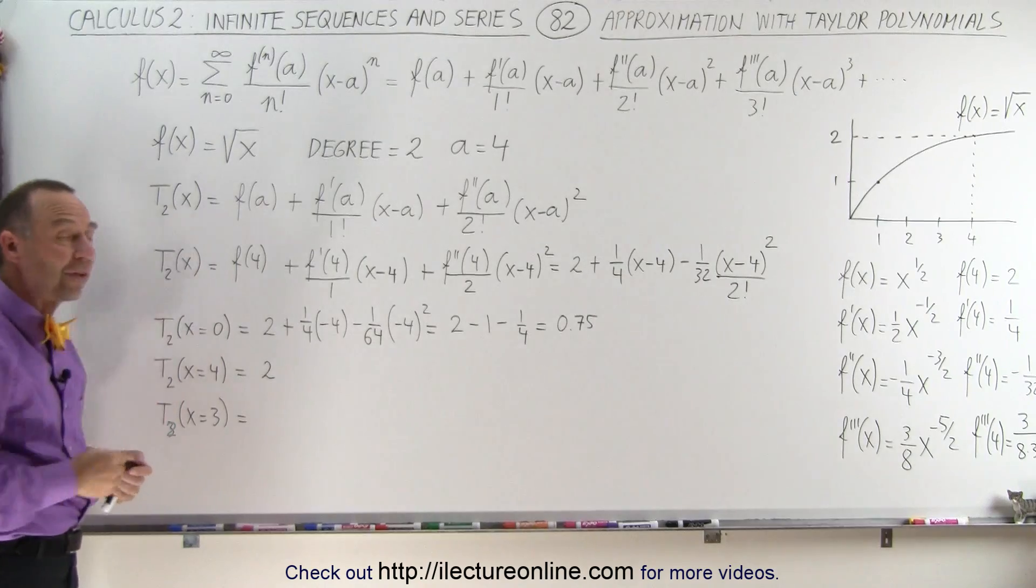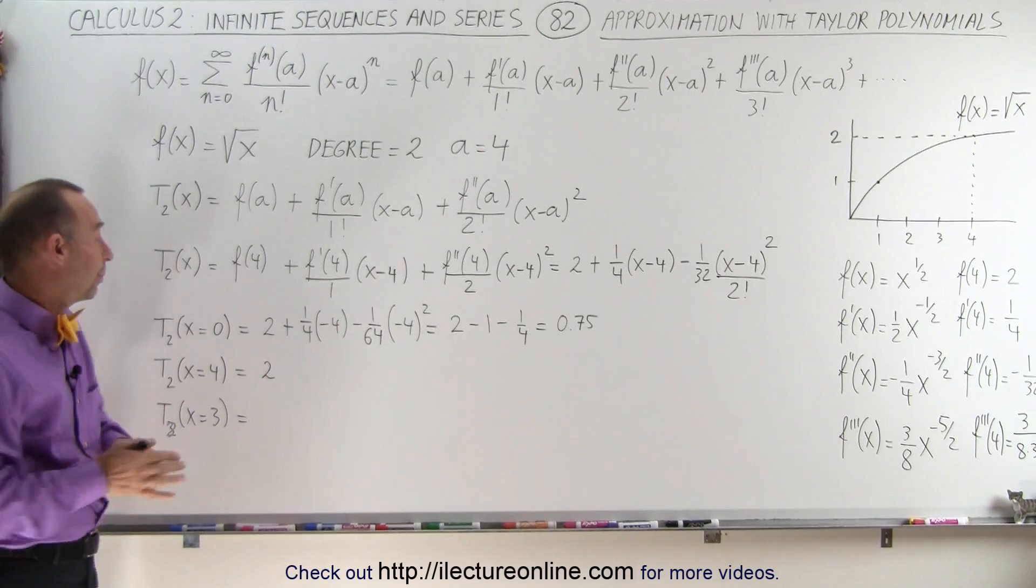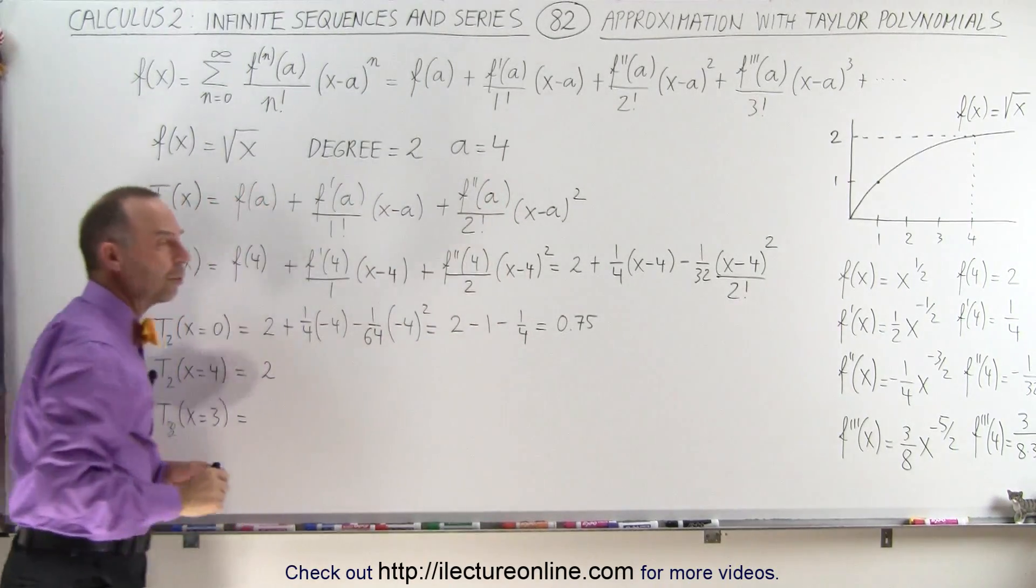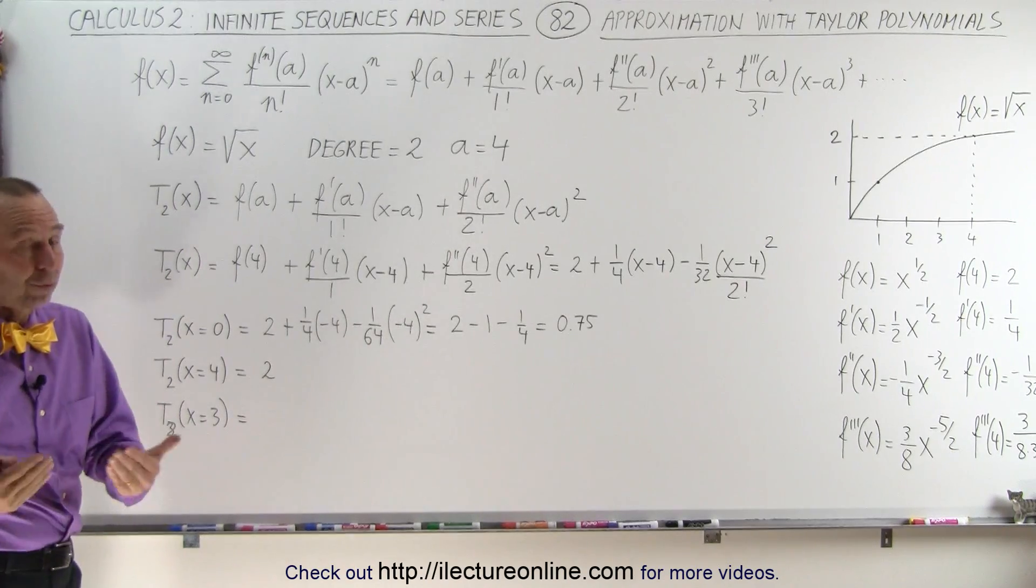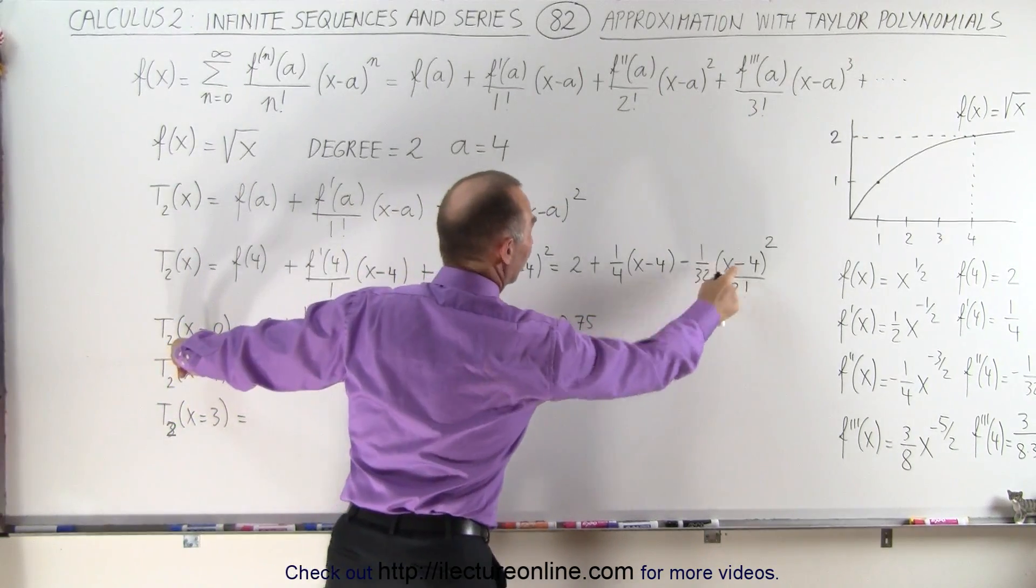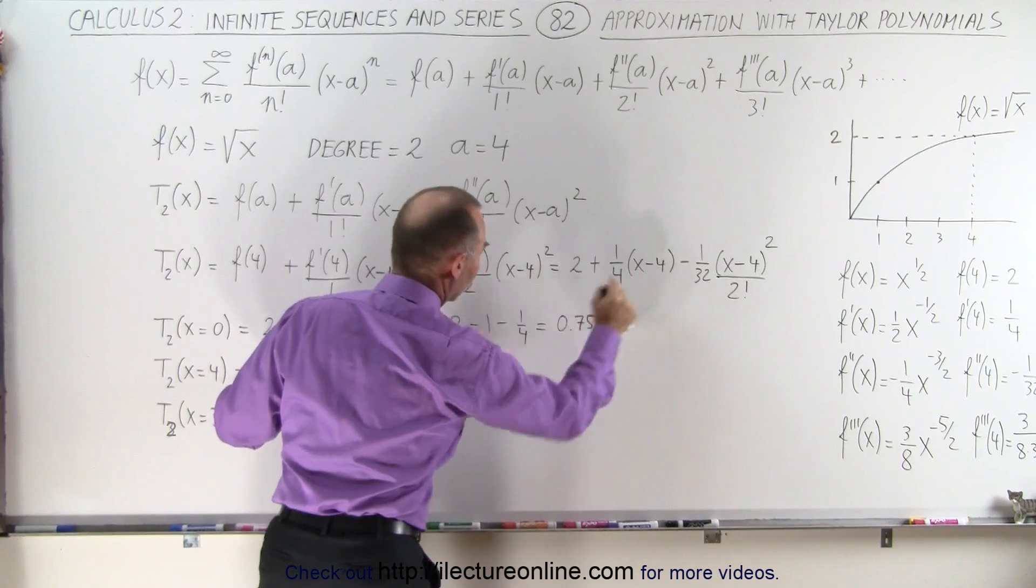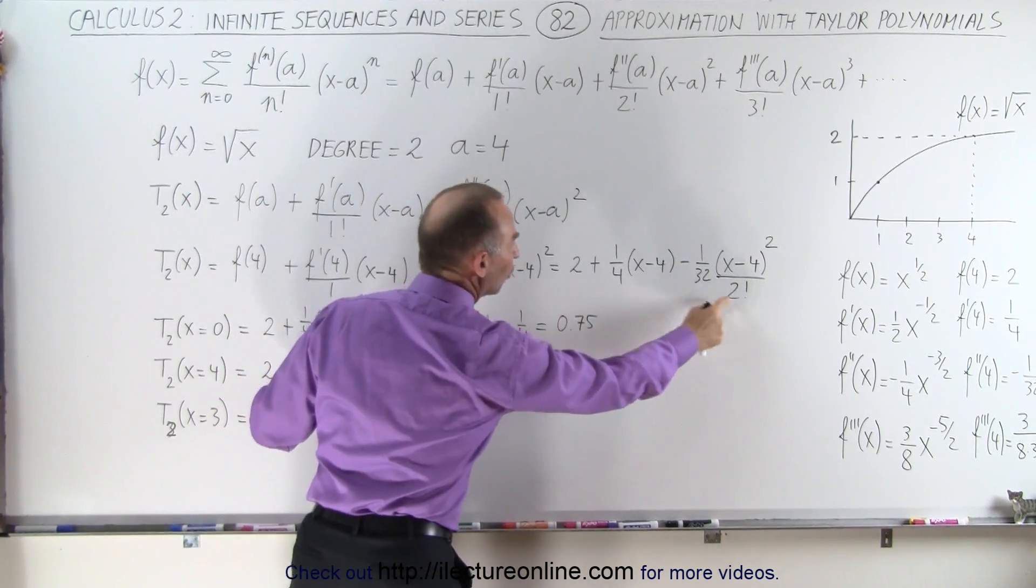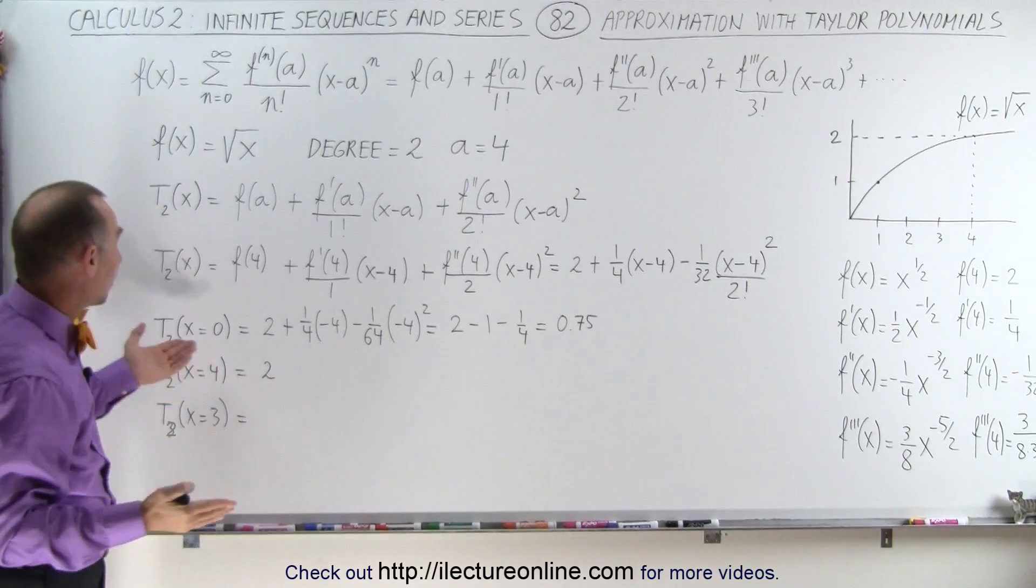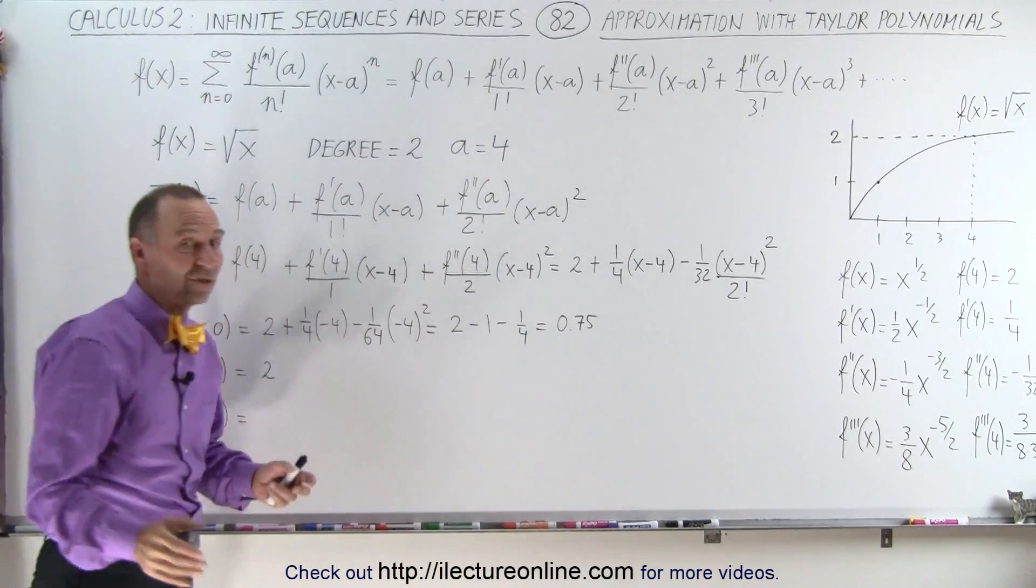And you can see then, when we evaluate the function at various values of x, let's see what happens. First of all, we're going to try x equals 0. Now, you wouldn't typically want to do that, because you chose a equals 4, and x equals 0 is quite a bit away from the value a equals 4, so you're not going to converge to the correct value very quickly. And that's what I'm trying to illustrate here. So when we let x equal 0, we plug in 0 for x here, and we plug in 0 for x here, we end up with 2 minus 1 over 4 times minus 4, since x is 0, and minus 1 over 64, that's 32 times 2, times minus 4 to the second power, again, since x is equal to 0. Now, of course, we know what the square root of 0 is. It's equal to 0, but this Taylor series expansion to the first three terms gives us 0.75, which isn't even close.